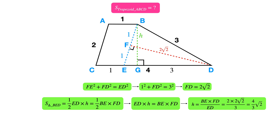We can now find the height. Assuming the length of BG is H, the area of triangle BED is calculated as half of ED times H, which is also equal to half of BE times FD. Solving this equation, we find the value of H to be three-quarters times the square root of 2.